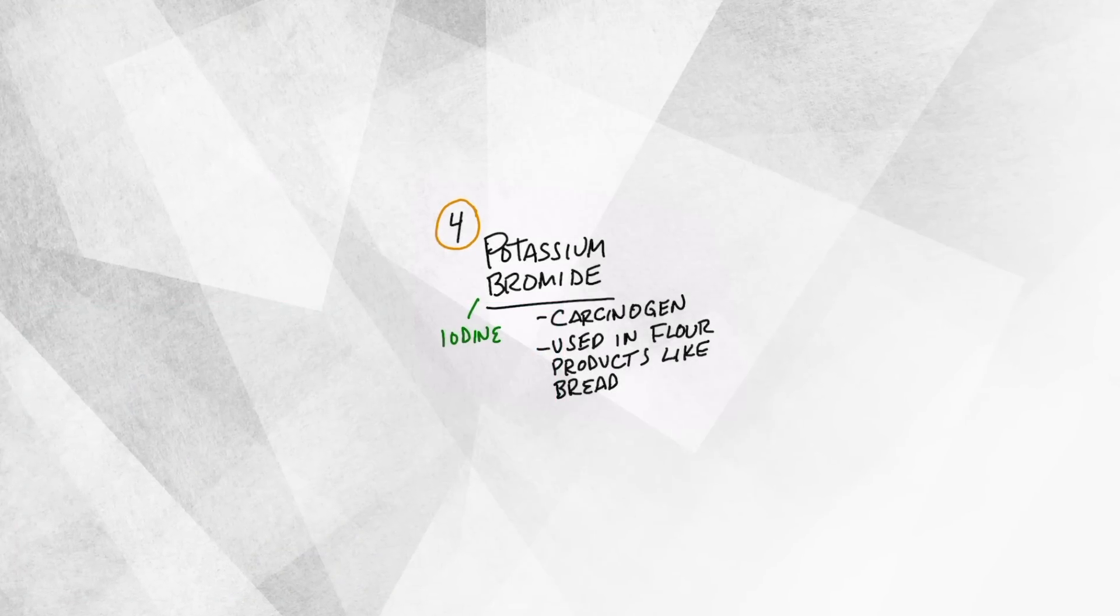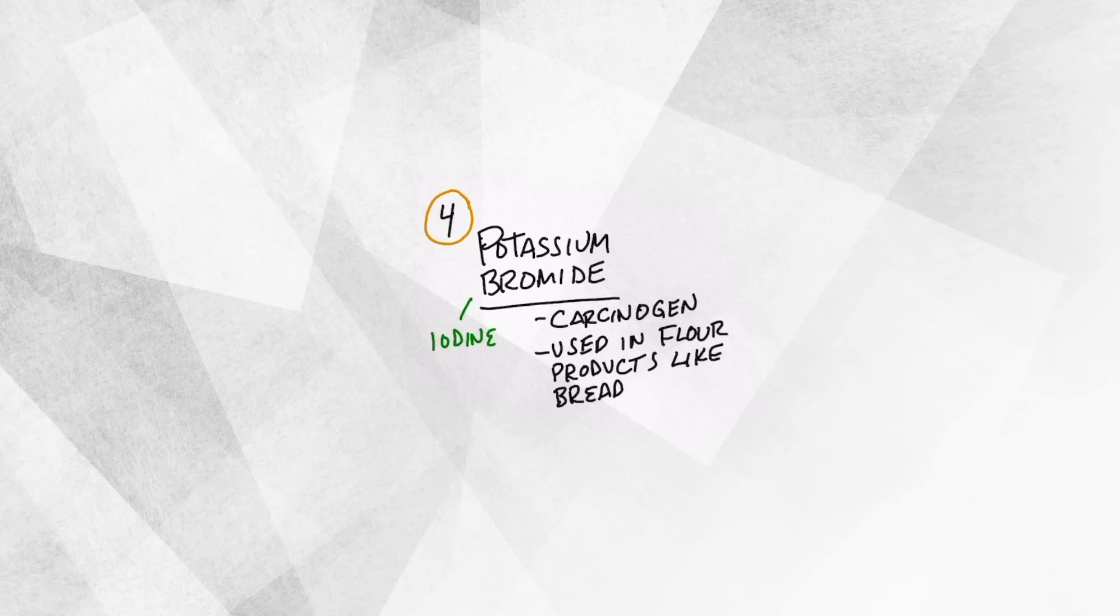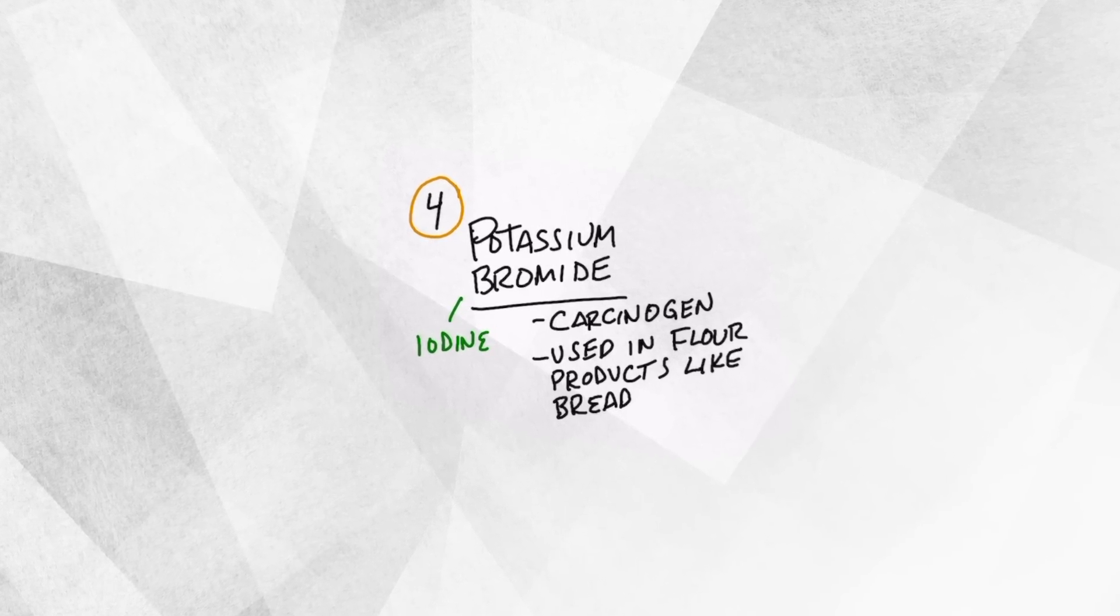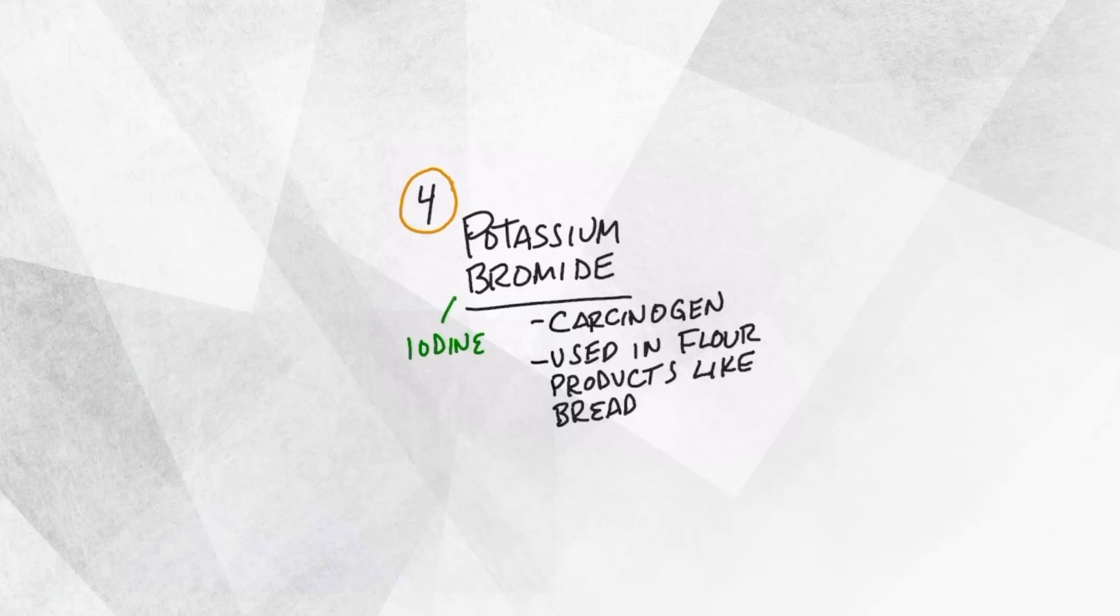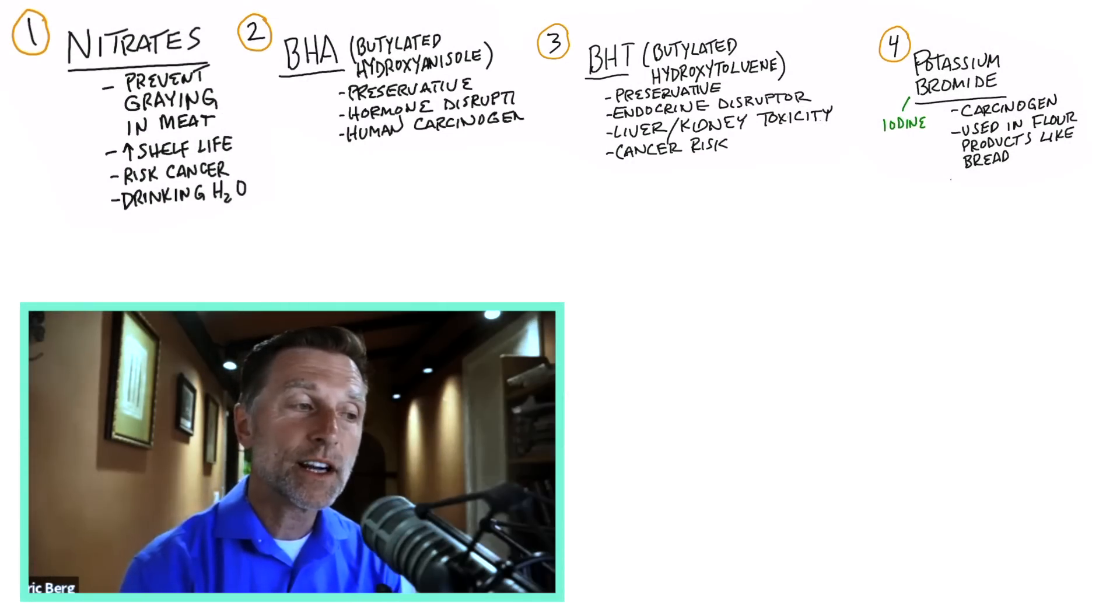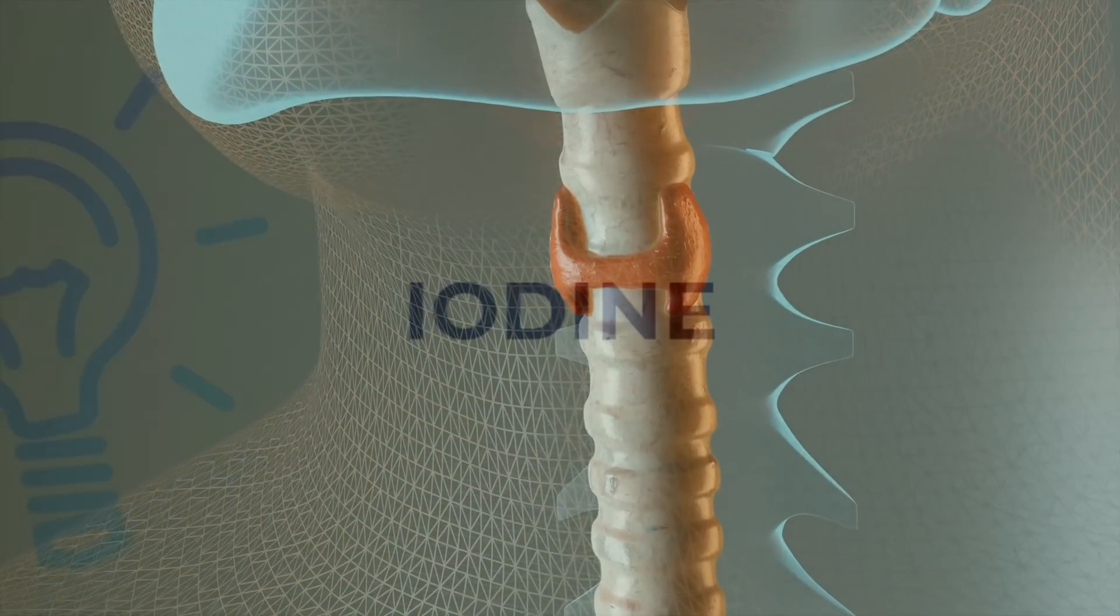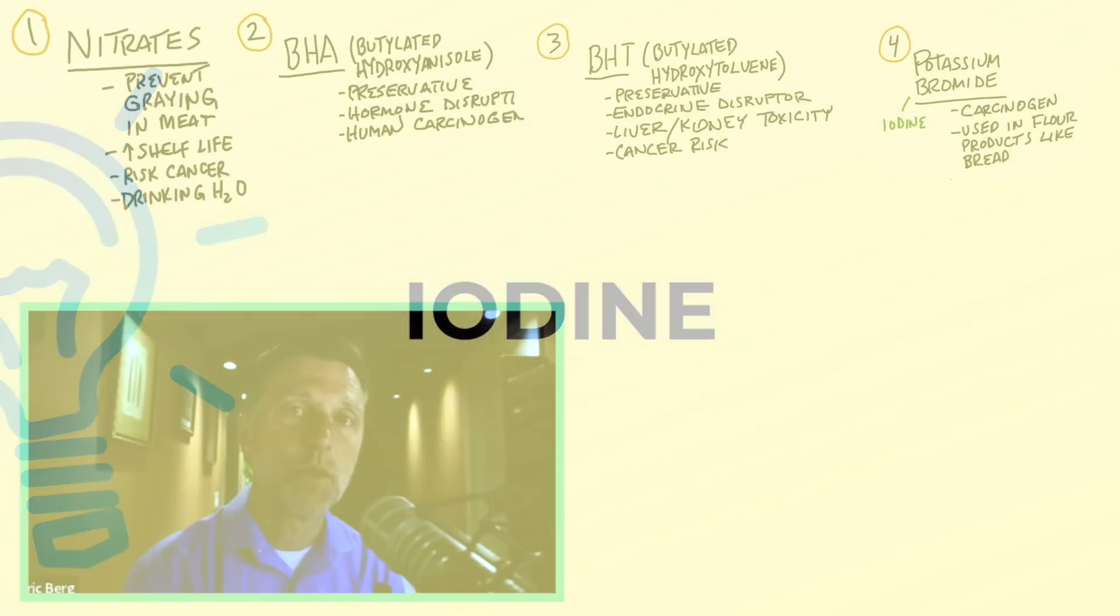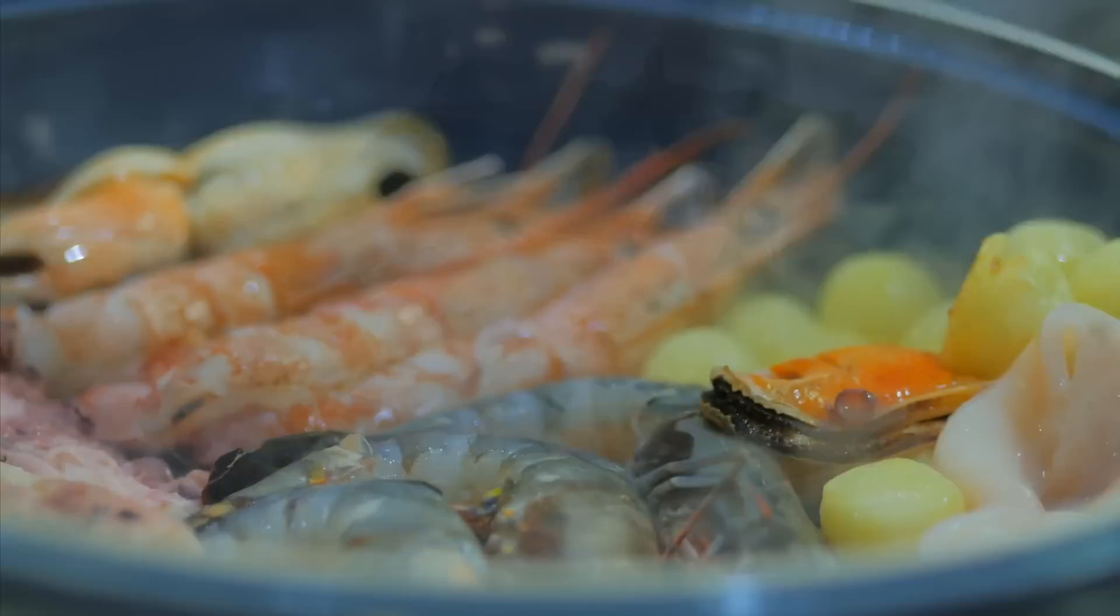Next one on the list is potassium bromide. This is a dough conditioner used in a lot of flour products that gives the product a certain texture. Potassium bromide is a carcinogen. It causes cancer and can definitely mess with the thyroid and inhibit iodine. The antidote or remedy to counter bromide in the body is iodine, whether in sea kelp or when you eat seafood.